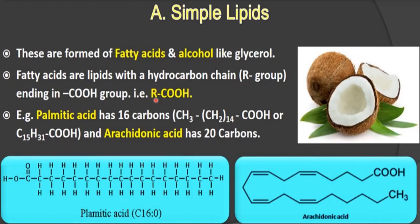This carboxyl group is present in all fatty acids. For example, palmitic acid has 16 carbons — formula CH₃(CH₂)₁₄COOH. You can count: CH₃ is 1 carbon, 14 carbons in the chain, and 1 carbon in the carboxyl group — total 16 carbons. Another example is arachidonic acid, which has 20 carbons. So the R group can vary in number of carbons.